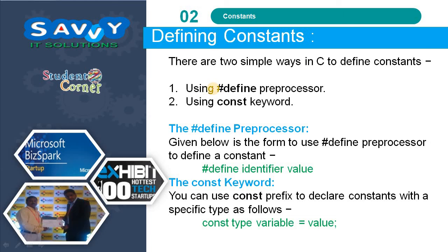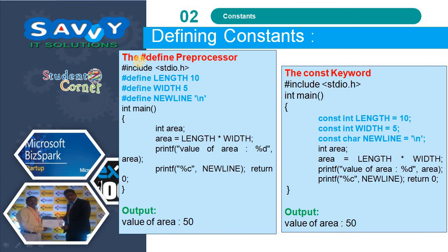Defining constants: there are two simple ways in C to define constants — using the #define preprocessor and using the const keyword. The #define preprocessor form is: #define identifier_name value. You can also use the const prefix to declare constants with a specific type: const type variable = value. For example, #define LENGTH = 10, WIDTH = 5 — whenever we use LENGTH and WIDTH, the values are automatically replaced with 10 and 5.